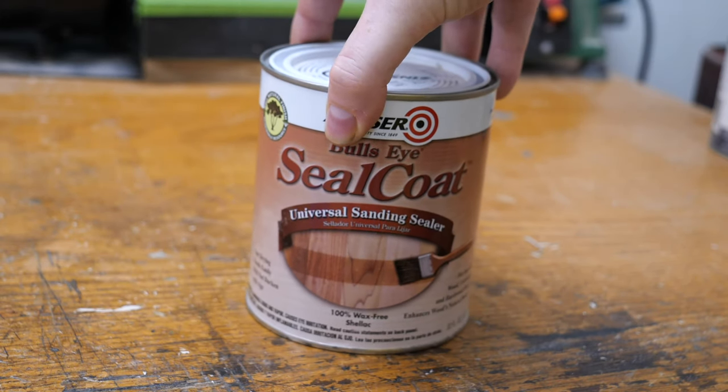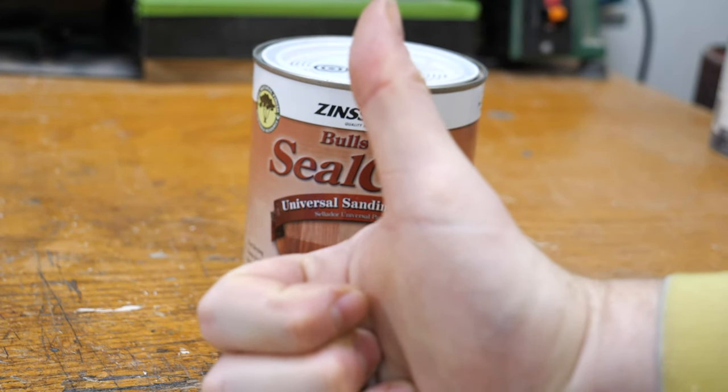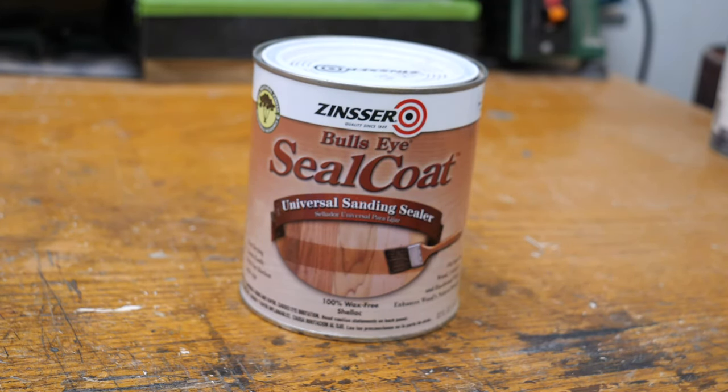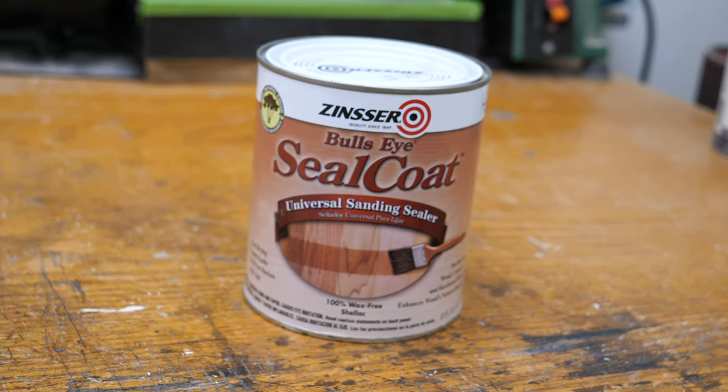But there's something that takes every checkbox, and it's shellac. And shellac is awesome. It's repairable, it's strong, it's flexible enough, it dries in minutes. That's what you should use on your drumsticks. Unless you're willing to do some sort of two-part catalyzed spray job, nothing's going to beat shellac.